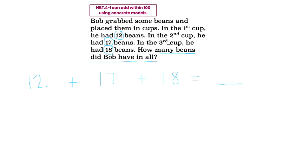If I am adding within 100 using concrete models, the concrete models we are going to use today are base 10 blocks. In order to know which base 10 blocks to use, I need to label each of these numbers by their place value. Since 12 is a two-digit number, I am going to label it with T for tens and O for ones. I see that the one is in the tens place, so I am going to make one ten rod.